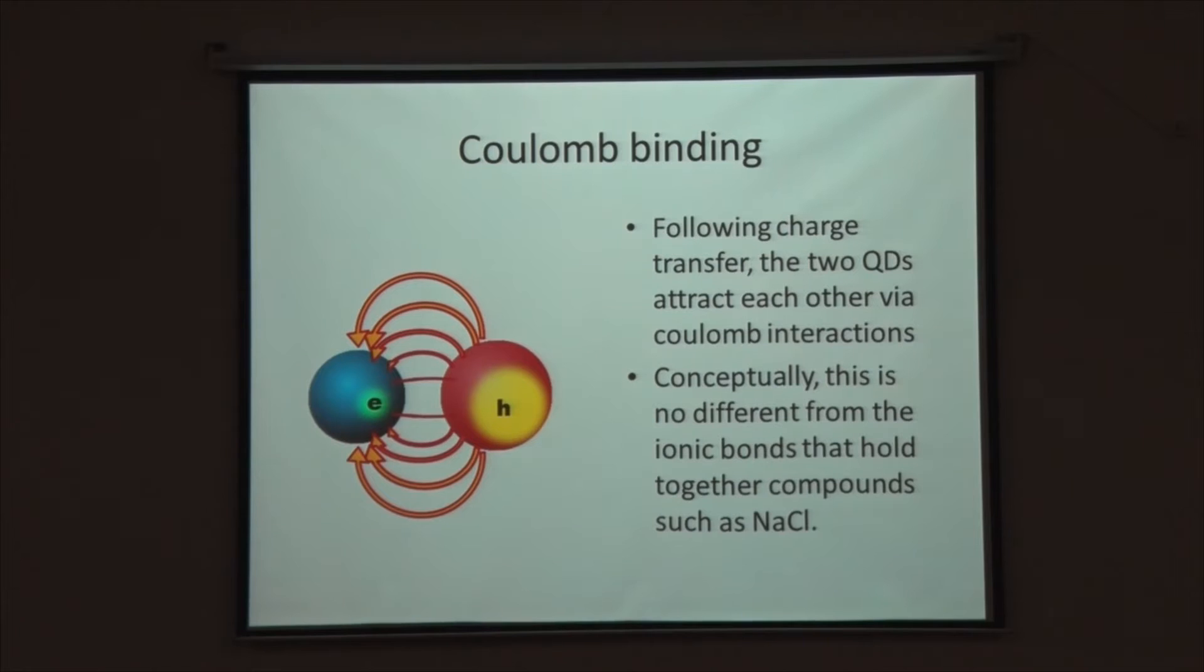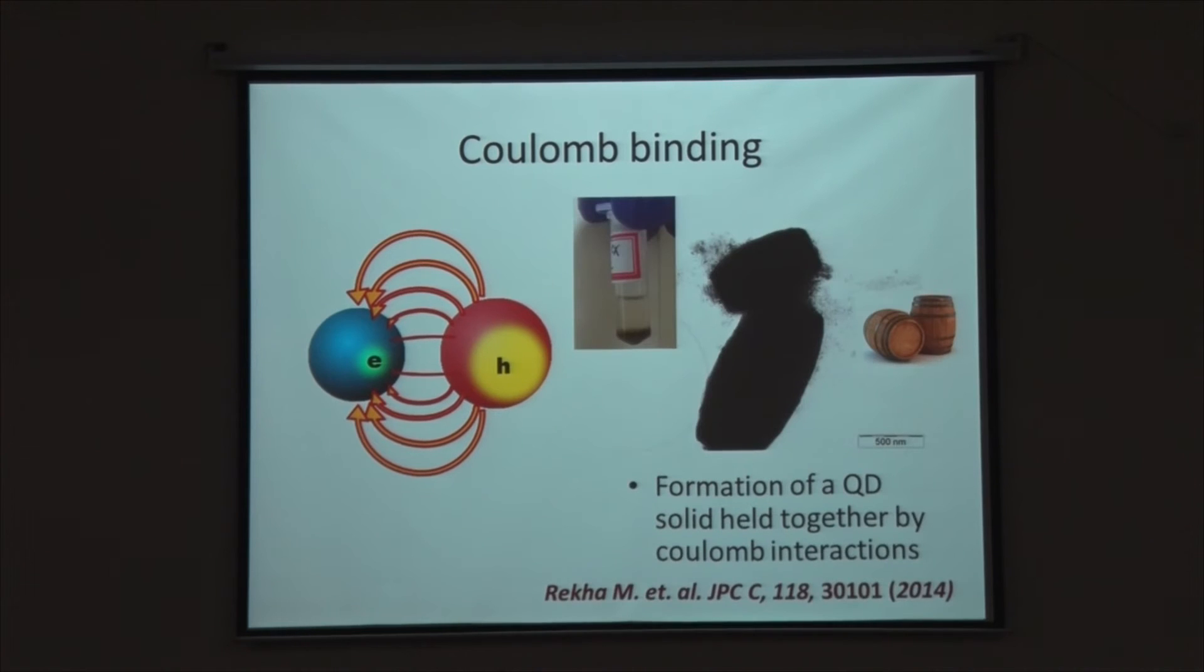Once we believe there is this charge transfer and we can even measure the electric fields, there comes the next point. Now we have two opposite charges sitting right next to each other. Obviously we know what is going to happen. They start having a strong coulomb interaction or coulomb pull between them. This is conceptually no different from what happens in a compound like sodium chloride. It is the same thing but in a scaled up system. These coulomb forces are strong enough to drag these quantum dots out of solution. When we start, these quantum dots are soluble in solvents like hexane. But by the time this charge transfer occurs, they form precipitates which consist of quantum dots simply aggregated together because of the coulomb forces.